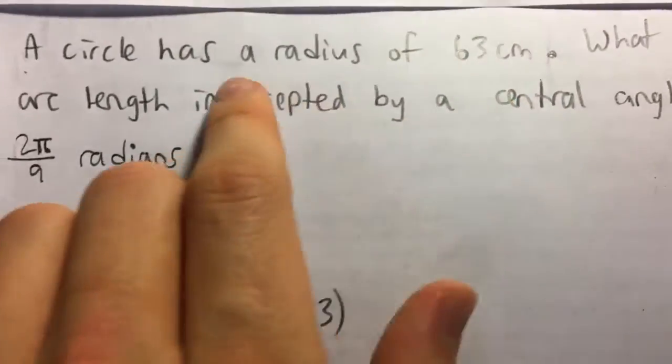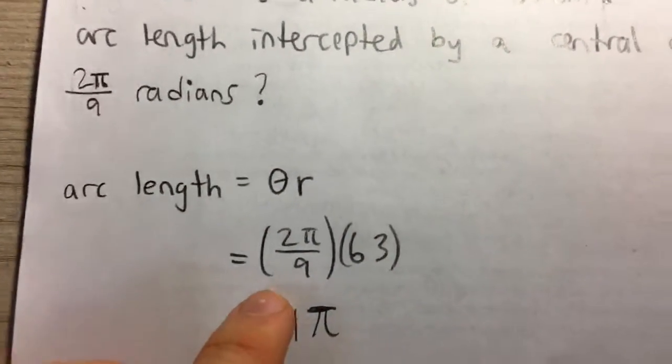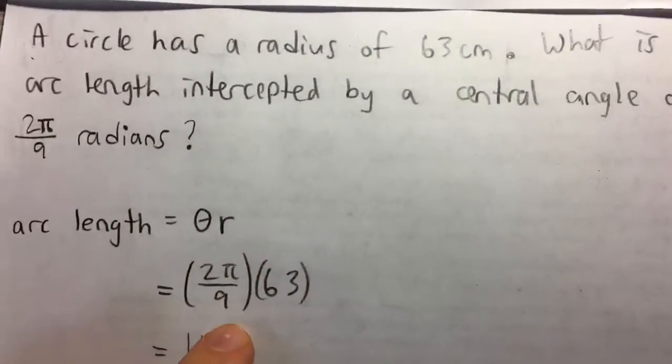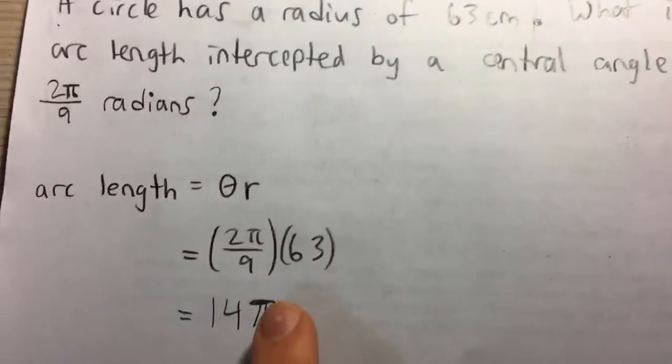And so we're actually given those values, so all we have to do is plug it in: 2π over 9 and 63 for the radius.